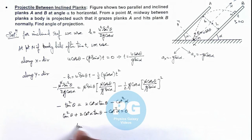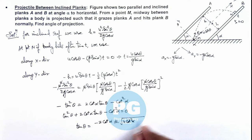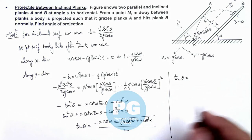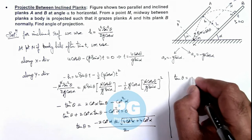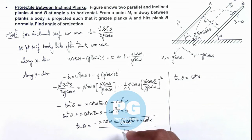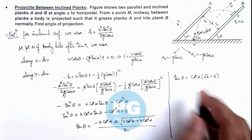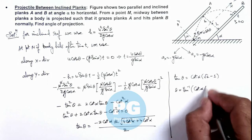Solving this quadratic for tan(θ), we get tan(θ) equals minus 2·cot(α) plus or minus the square root of 4·cot²(α) plus 4·cot²(α), all divided by 2. Since theta cannot be negative, we choose the positive sign. Taking cot(α) as common and simplifying, the value of tan(θ) equals cot(α) multiplied by (√2 minus 1).